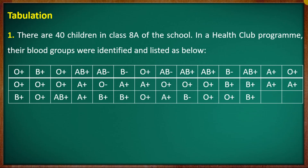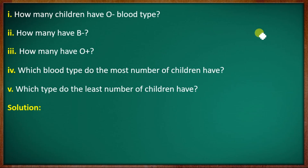The blood group data is given. First question: how many children have O negative blood type? Second: how many have B negative? Third: how many have O positive? Fourth: which blood type do the most number of children have? Fifth: which type do the least number of children have?